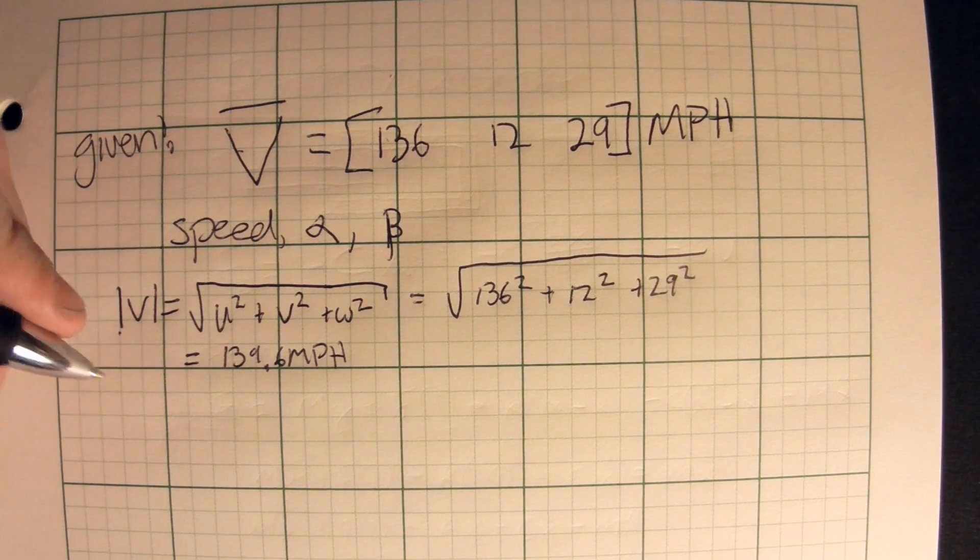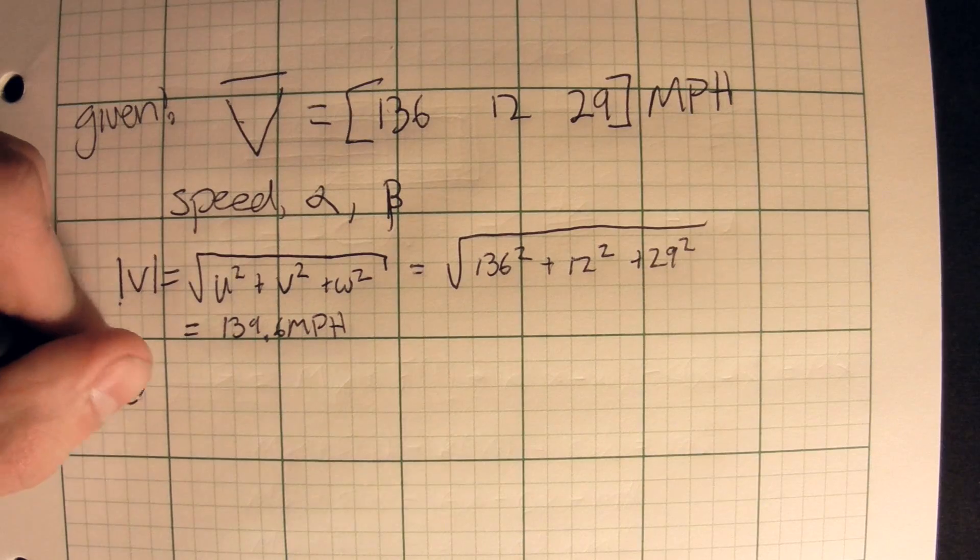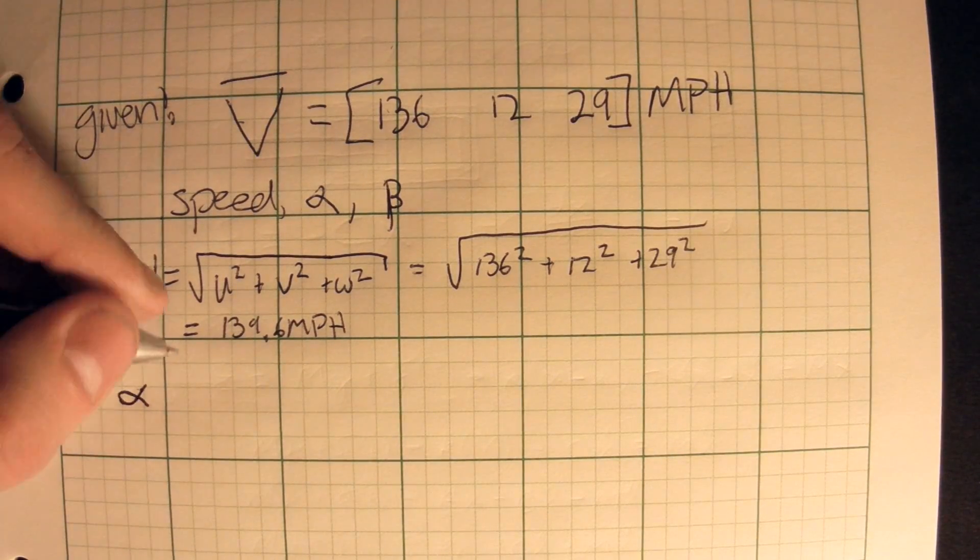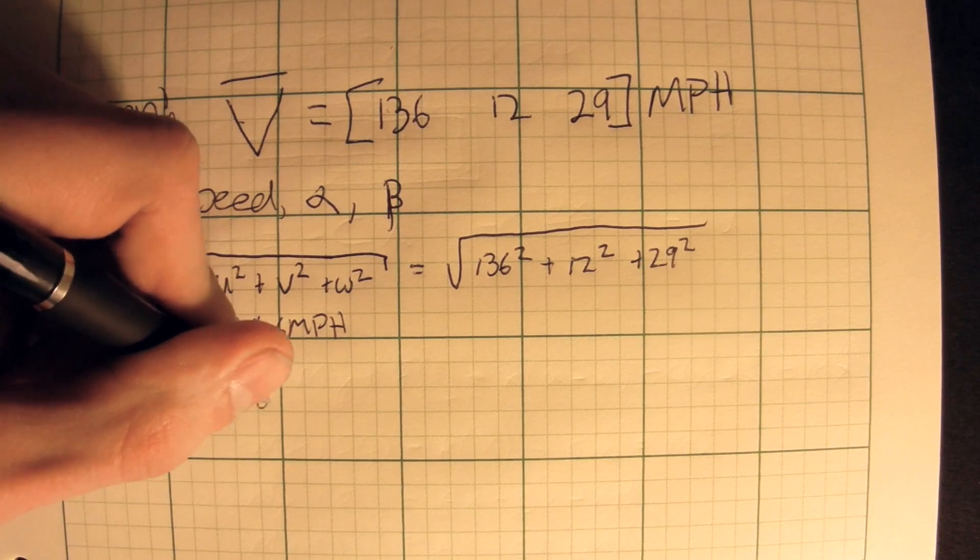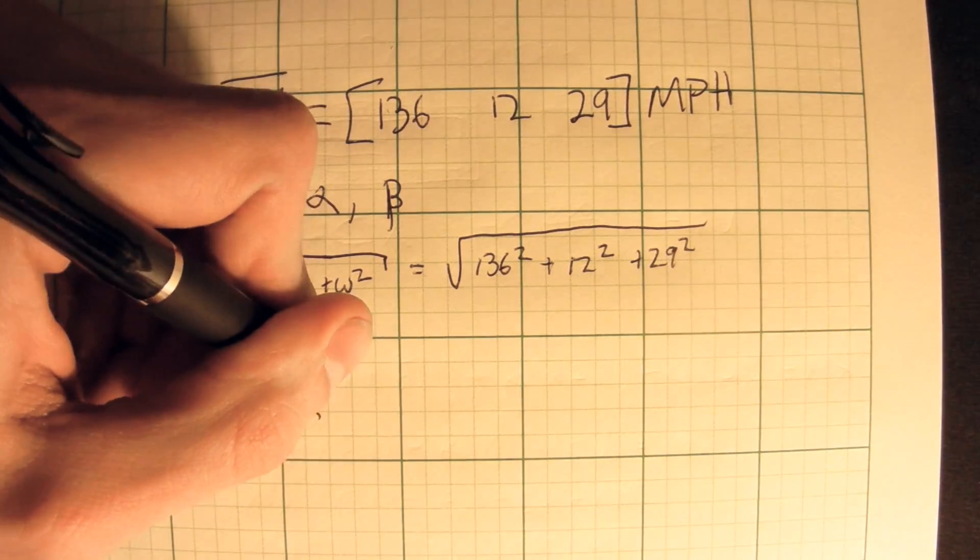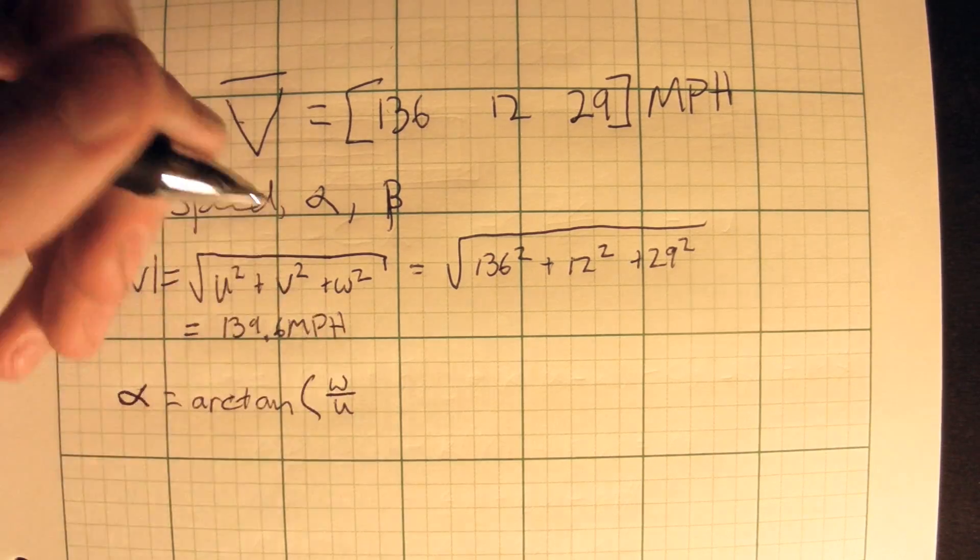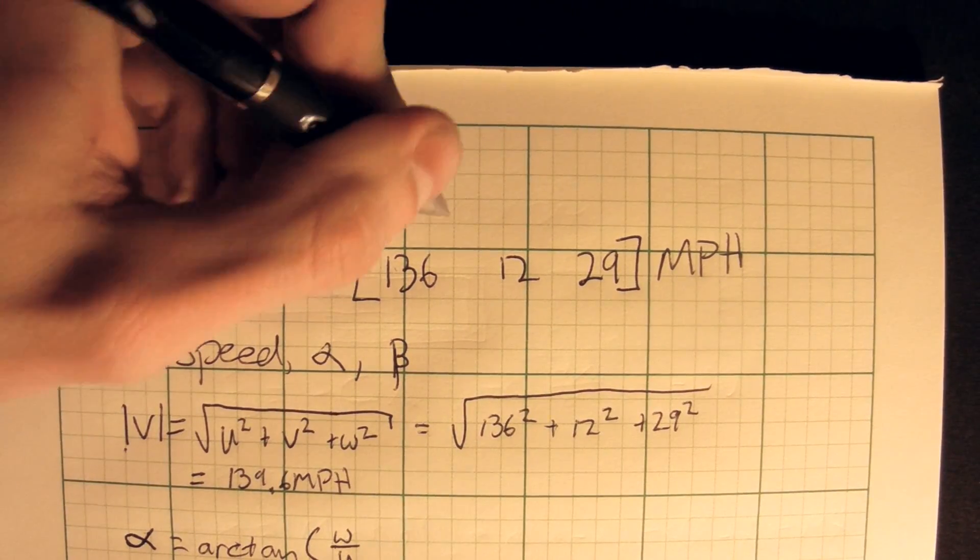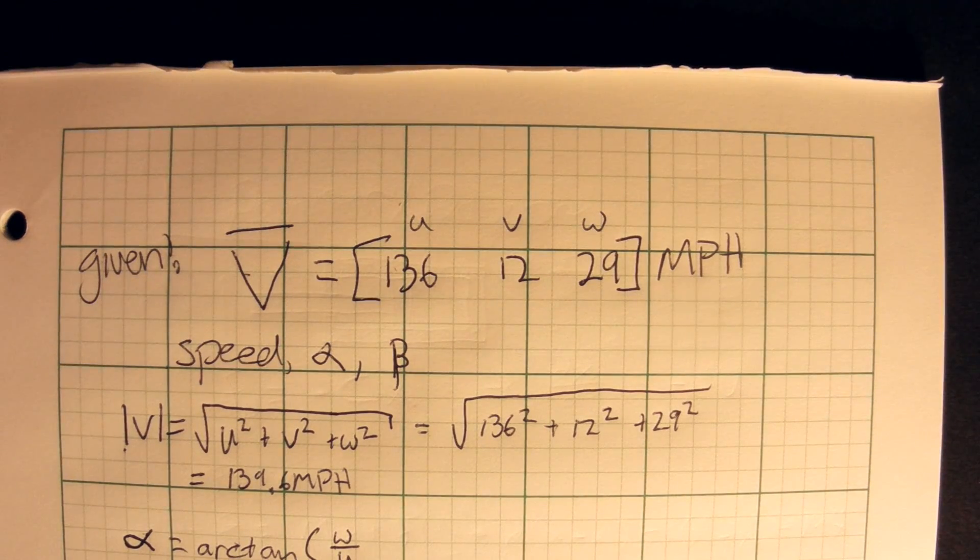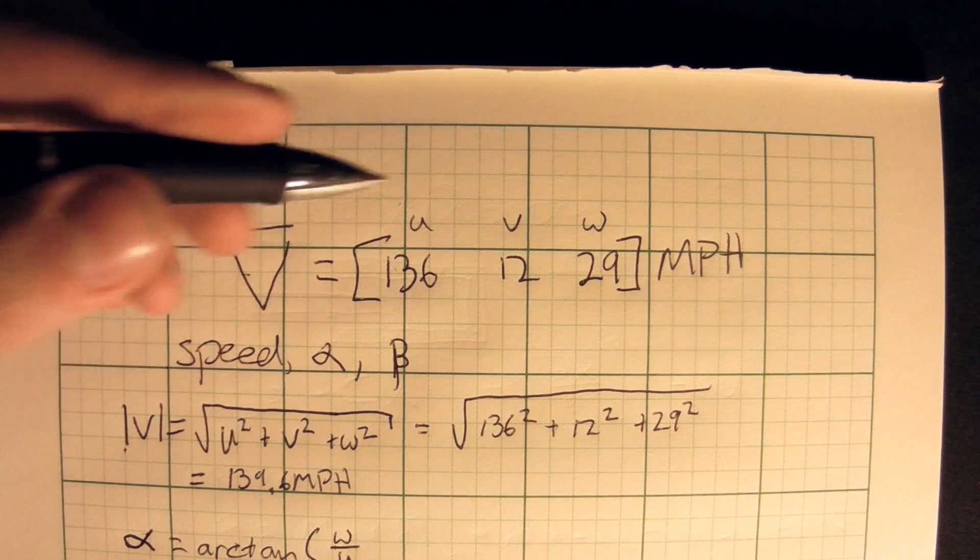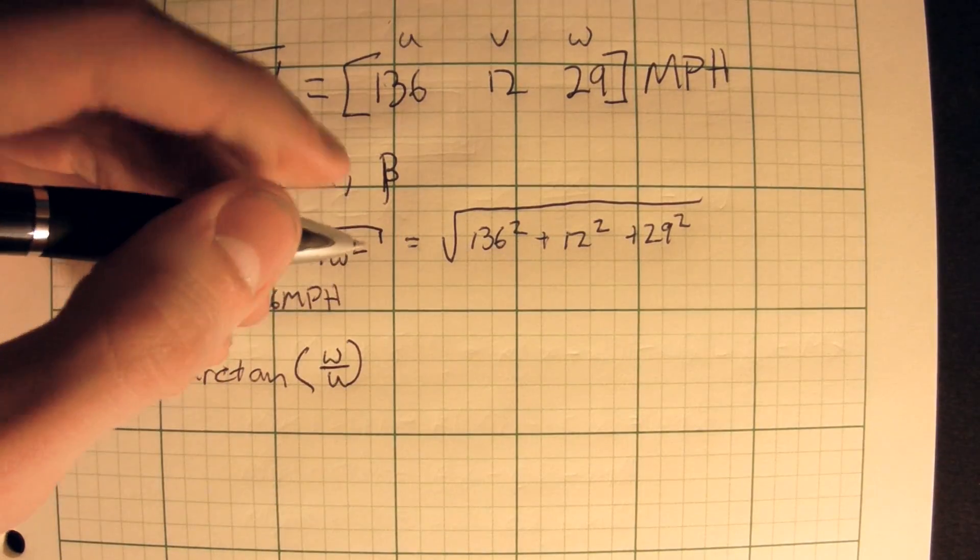Next, let's find the angle of attack. So we know the angle of attack from the previous lecture is equal to the arc tan of w over u. Now remember, this right here is u v w. That's the other name for those three vectors or three numbers. So that's just a basic application of that.